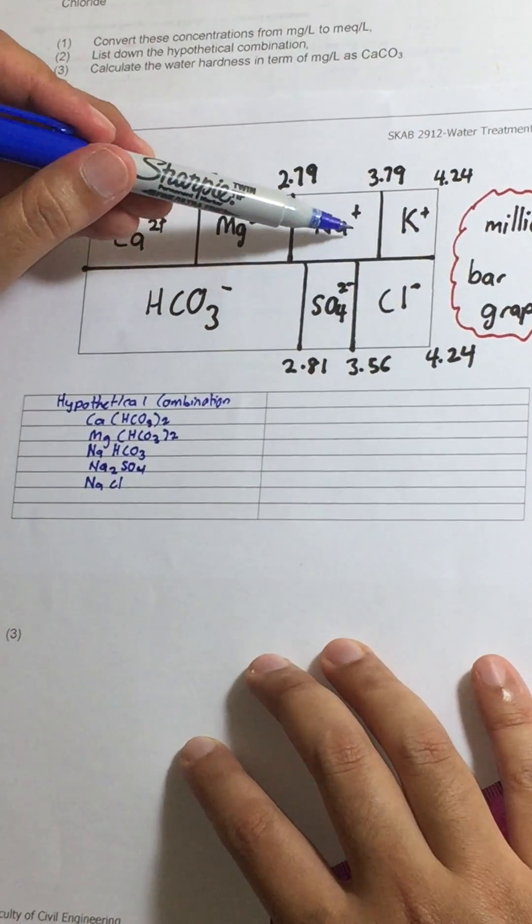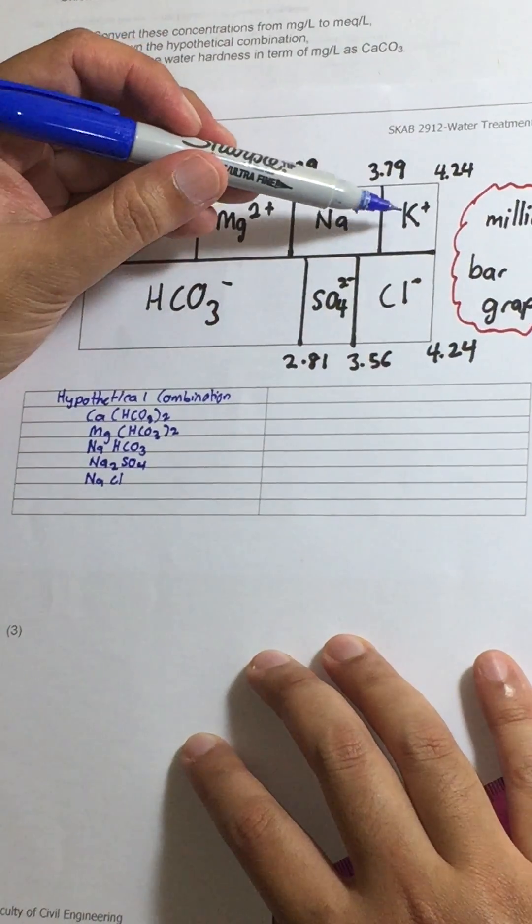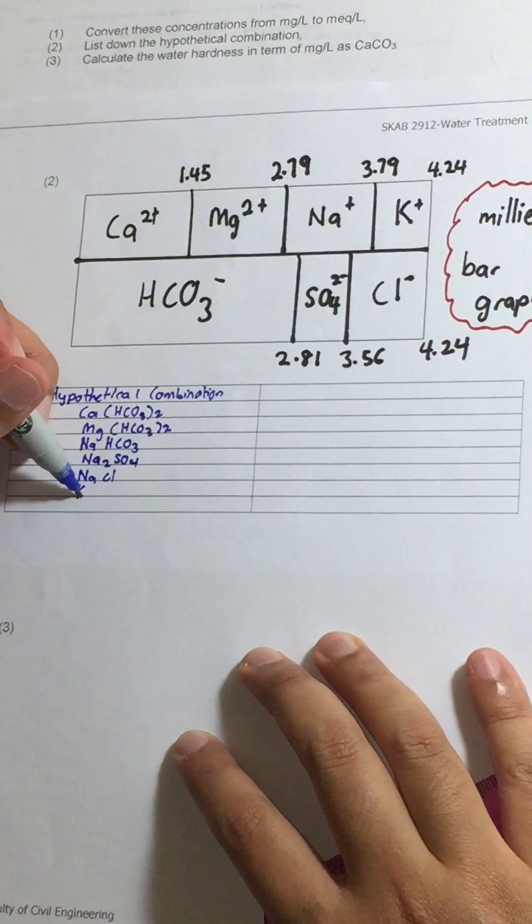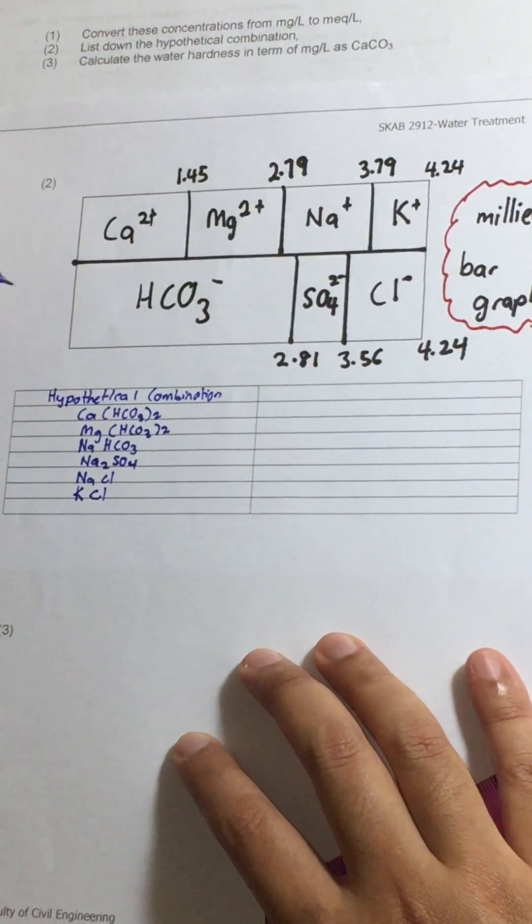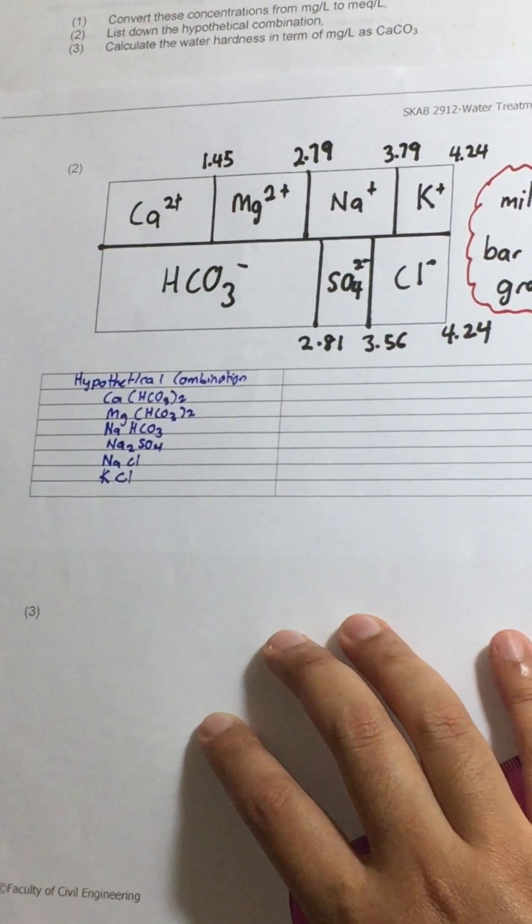As for sodium chloride, NaCl is enough. And the last thing that we have is potassium chloride. So this is the hypothetical combination. Thank you from Muzaffar.